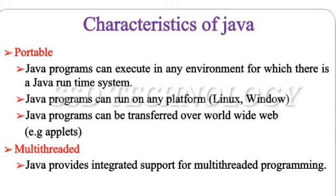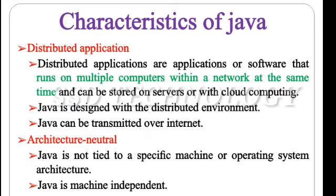Multithreaded. Java provides integrated support for multithreaded programming. Distributed Application. Distributed applications are applications or software that run on multiple computers within a network at the same time and can be stored on servers or with cloud computing. Java is designed with a distributed environment and can be transmitted over the internet. Architecture neutral. Java is not tied to a specific machine or operating system architecture. Java is machine-independent.